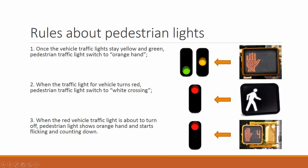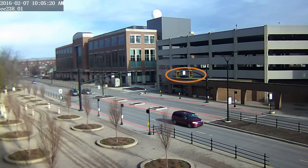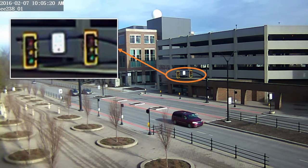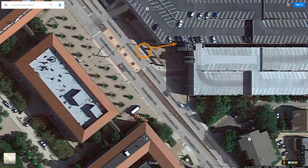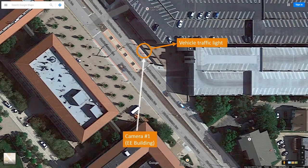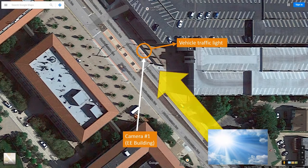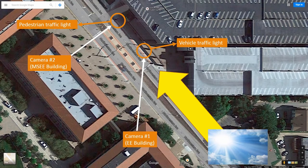There are two types of traffic lights in this intersection: one for vehicles and another for pedestrians. The first camera captured the traffic signal from the vehicle traffic light. But during the early morning, sunlight can reduce the quality of the image — it seems all traffic lights are on, which is not true. To solve this problem, I installed a second camera as a reference to capture the traffic signal from the pedestrian traffic light, so the accuracy of detecting traffic lights can be improved.